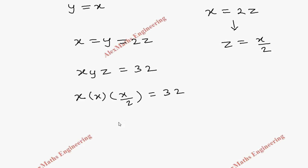So this is x³, and this 2 I can take to the other side, so it is 64. 64 is 4³. So when x³ = 4³, the value of x is 4.